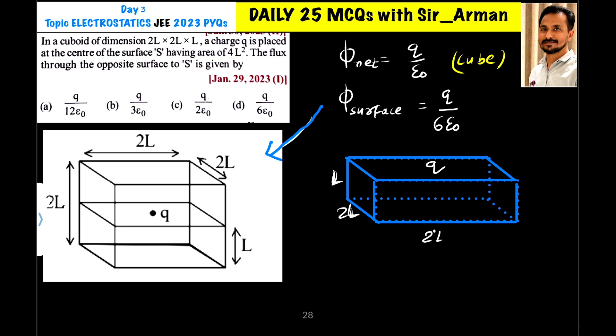This is the cuboid having one side here 2L, another side 2L. This side which is going into this plane is 2L and the side which is vertical, this side is L, this vertical side is L.